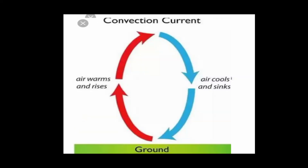How does heat travel in air? In which direction does the smoke go? The air near the heat source gets hot and rises. The air from the sides comes in to take its place. In this way, the air gets heated.